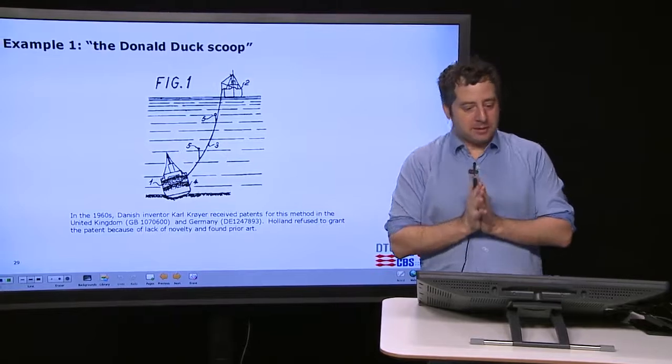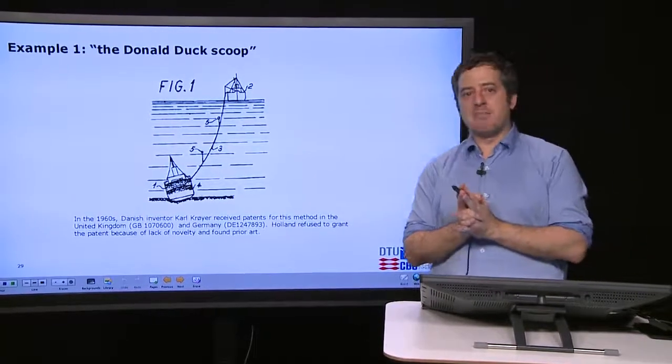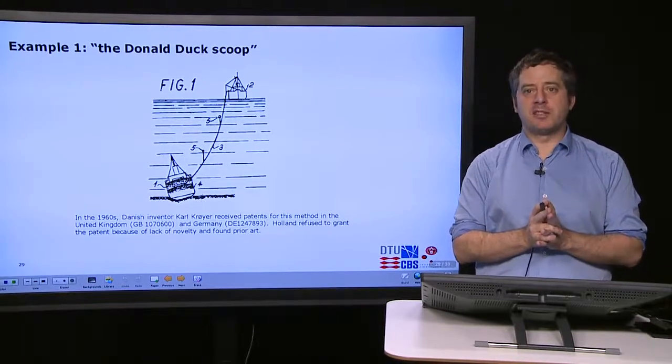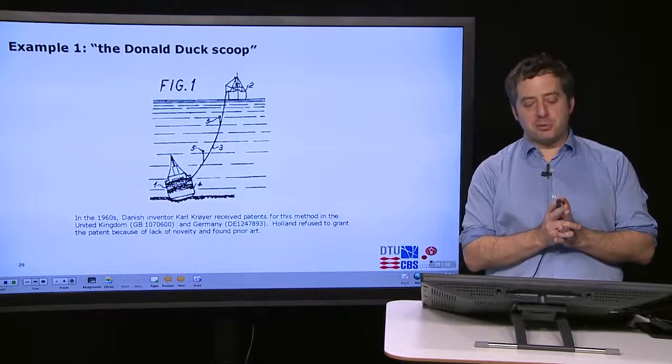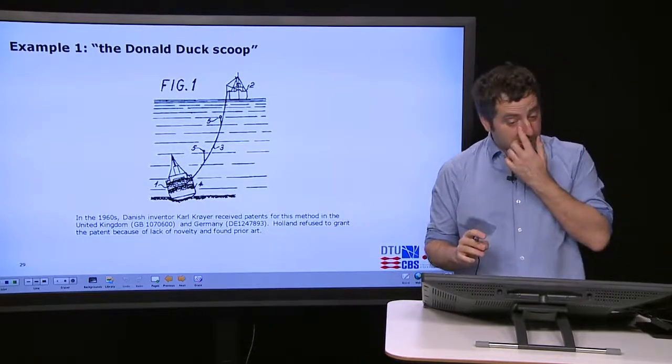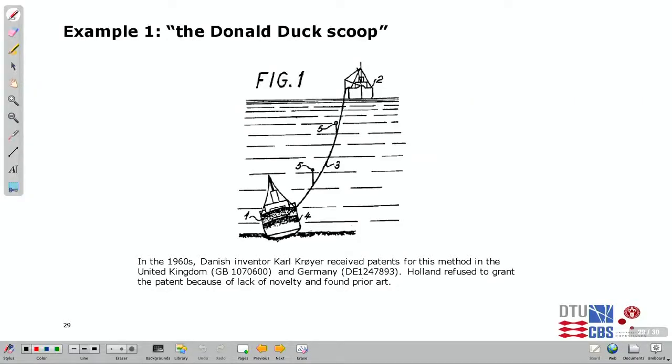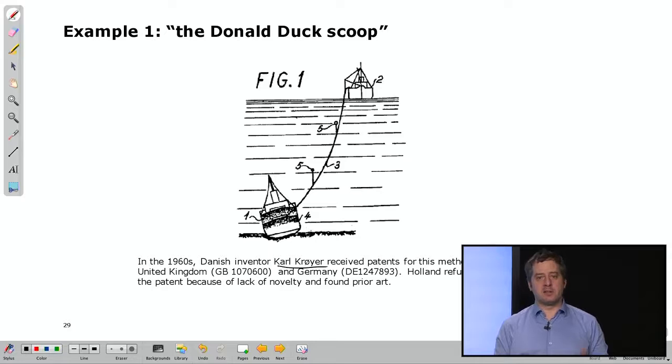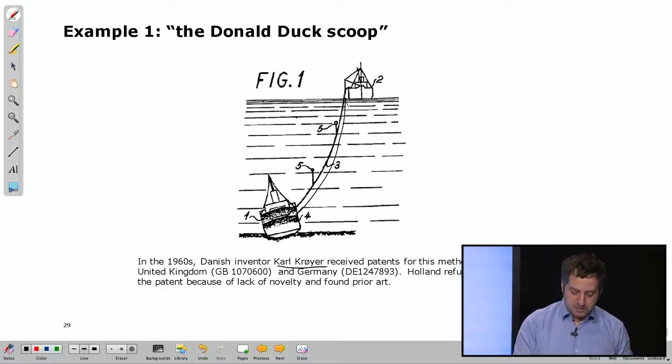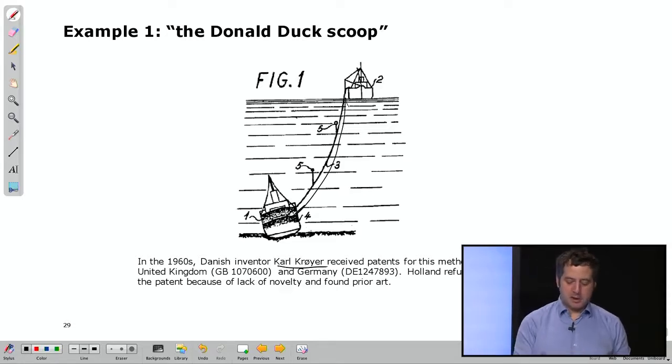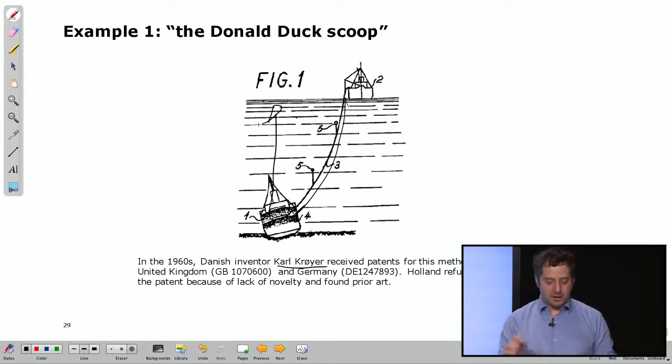To conclude with that, let's have an example, which is a classical example of prior art that can be found in the most obscure places. Actually now, with the opening of the Russian archives and the Eastern European archives, some more goodies are coming out in terms of prior art, but we'll not get there. It's called the Donald Duck Scoop, an example which is used widely. It's a pretty cute story where in the 60s, this Danish inventor, Karl Krøyer, invented this way of recovering sunken ships by basically throwing in ping pong balls or any kind of floating little balls inside the sunk ship and then the buoyancy of these balls will bring the ship up back to surface.